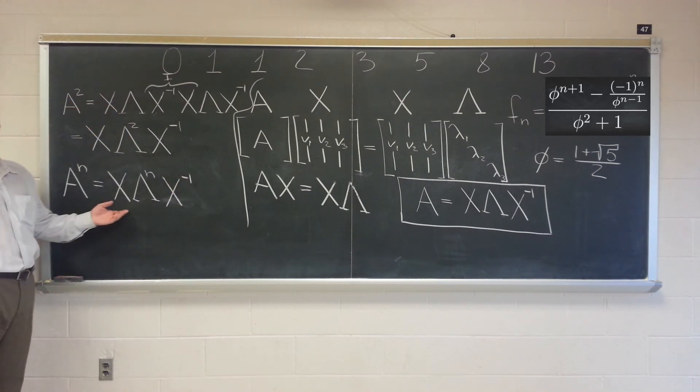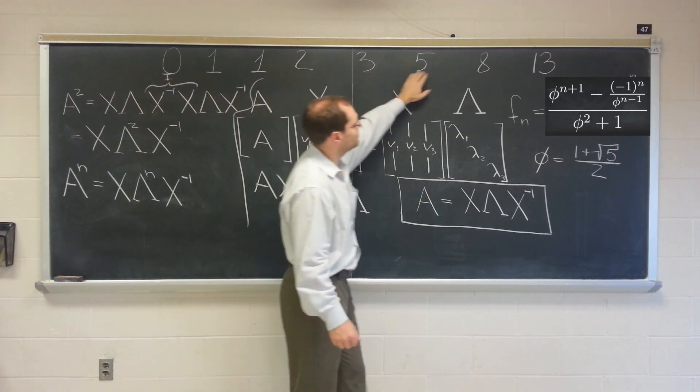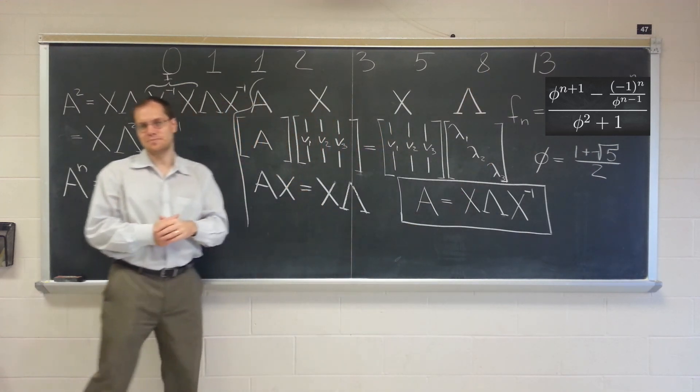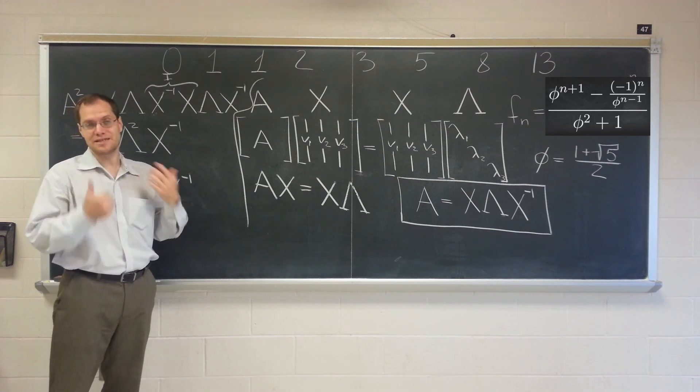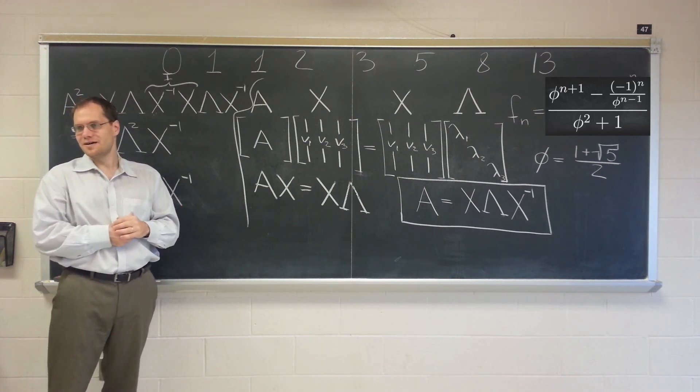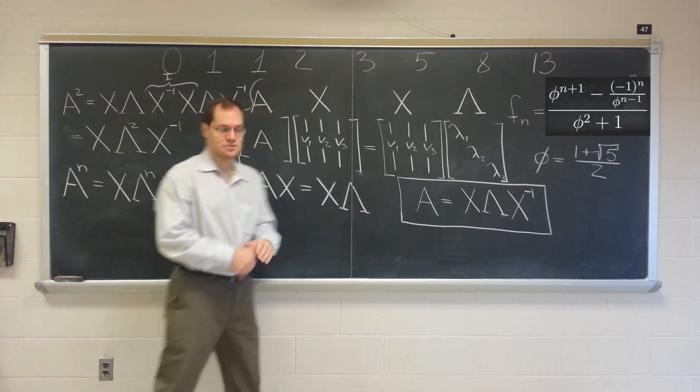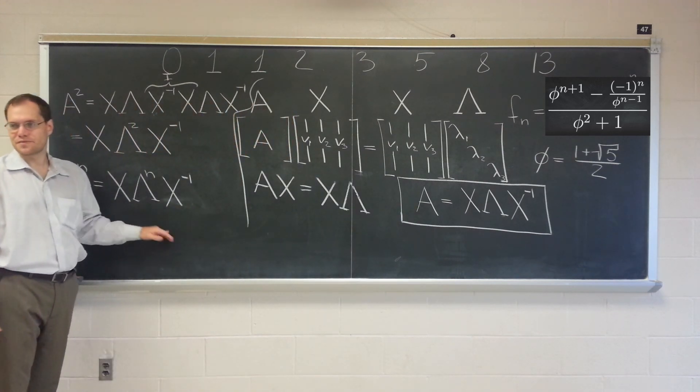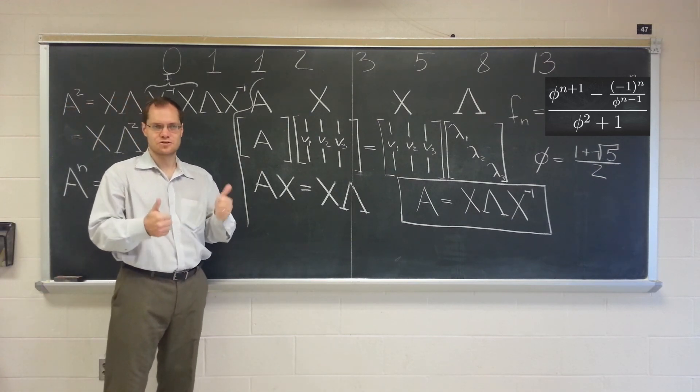And that's the application of the eigenvalue decomposition that we'll find today. We'll be able to formulate this calculation of the Fibonacci numbers as a matrix multiplication. You'll see. And then it'll be essential to raise that matrix to the Nth power. And we'll do it by calculating the eigenvalue decomposition of the matrix and then using this trick. Are there any questions? We're good?